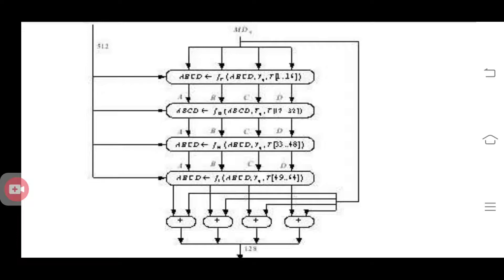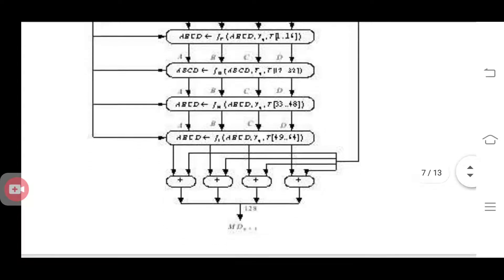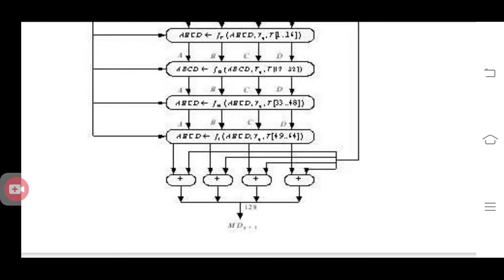The initialization vector is A, B, C, D, and you are using A, B, C, D buffers. The value Y, Q represents the part of a message. That is T of 1 to 16. The next round T of 17 to 32 represents 16 words from a table. For MD5 we already have a table or matrix with constant values. In the first round we use the first 16 words. After the 4th round, the output is added with the initialization vector using addition modulo. Combining these values in addition modulo gives us the 128-bit message digest.